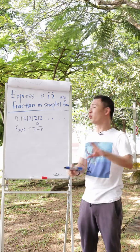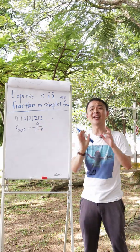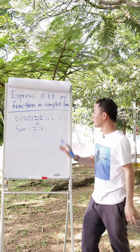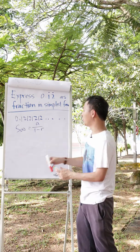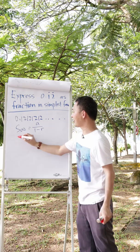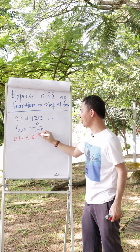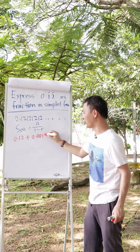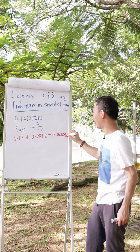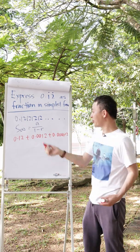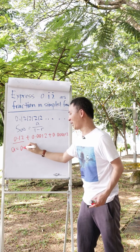Right now we need to find out what our a and r are, then substitute into this formula to easily get the fraction. So I need to ask myself: what is 0.121212? Basically it is 0.12 plus 0.0012 plus 0.000012 and so on. From here, I know my first term a will be 0.12.